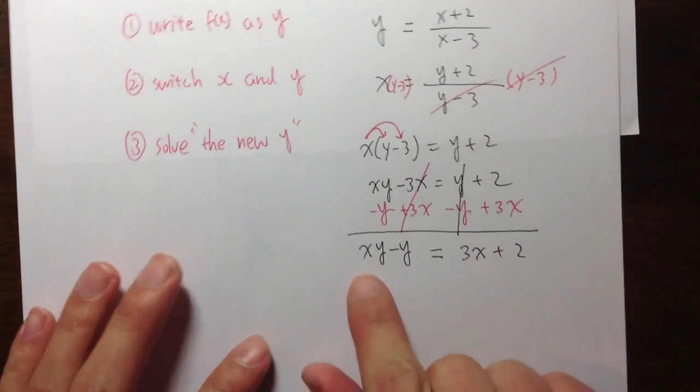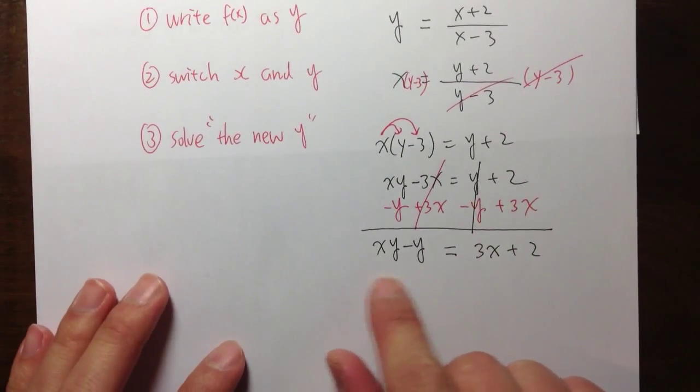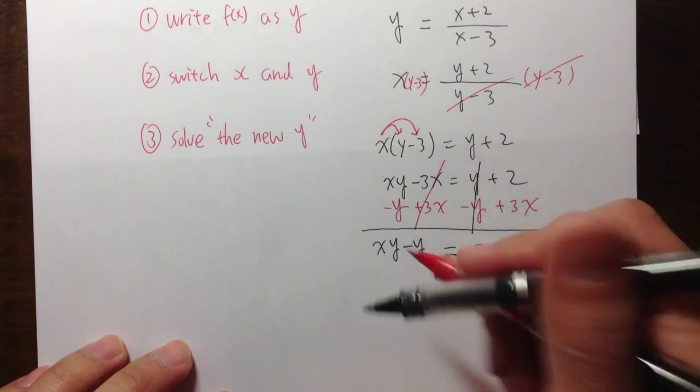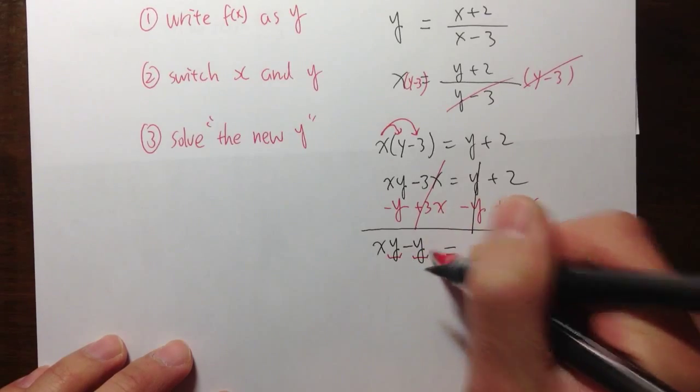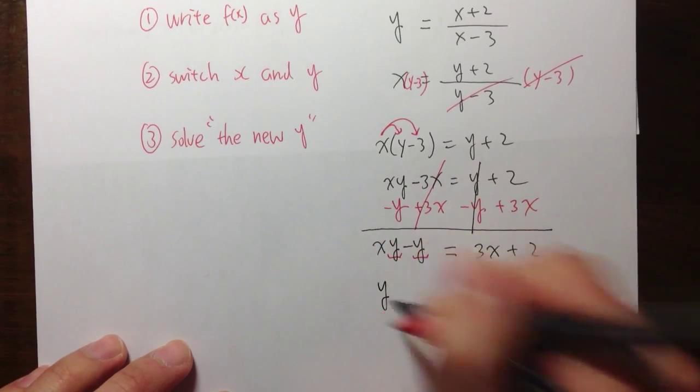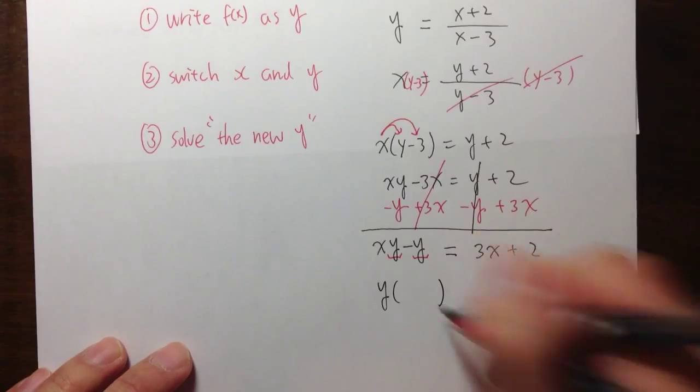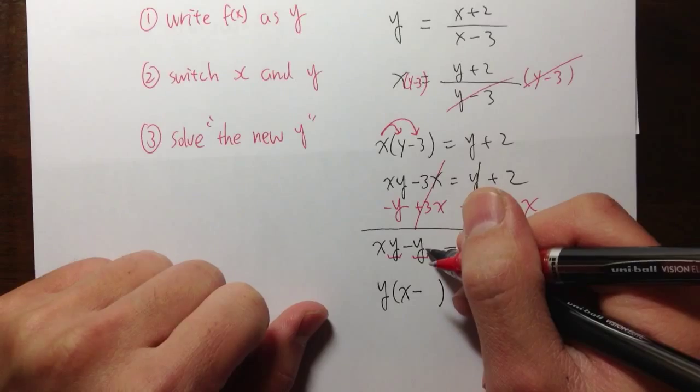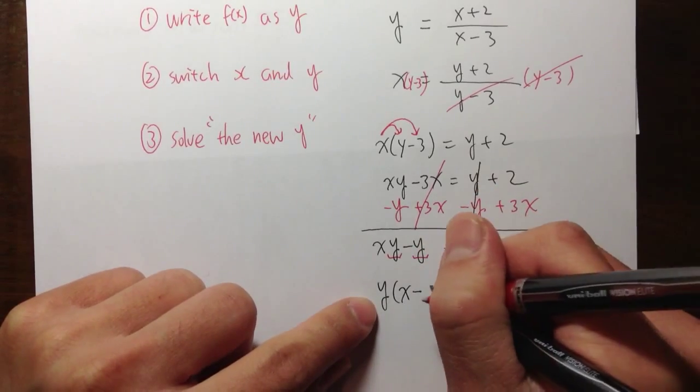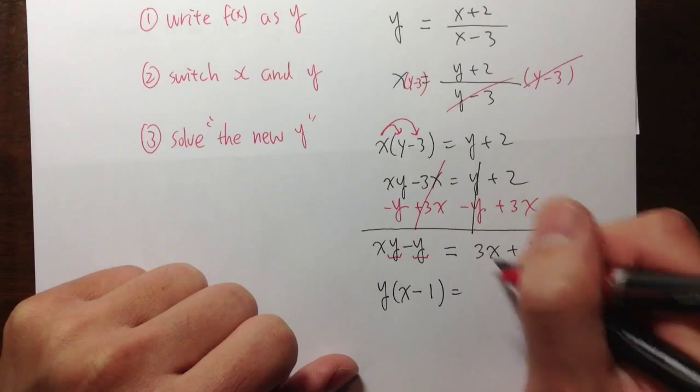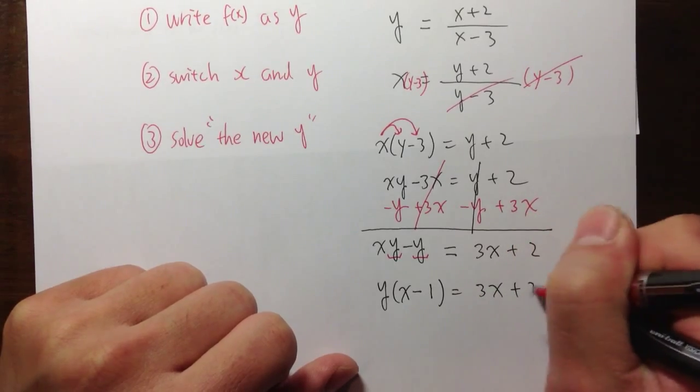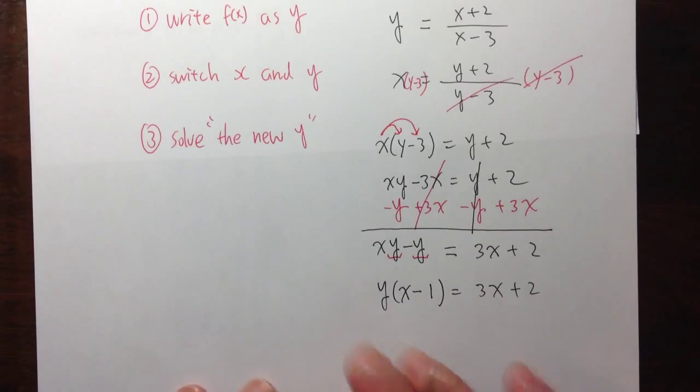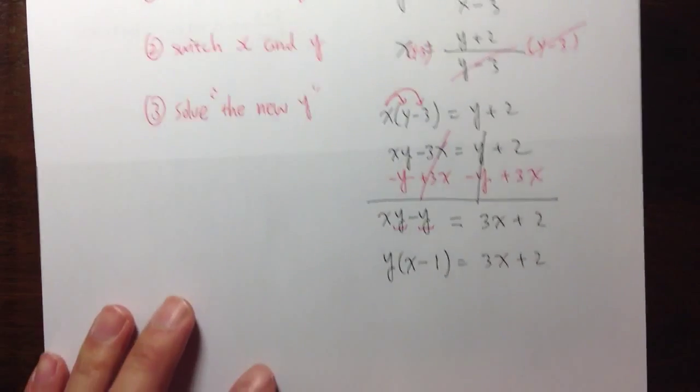And the good thing about this is that once the y's are on one side, we can factor out the y. So, notice the y's and y, we can factor that out. And then, we have an x left first. Minus, originally you have a y, you factor that out. So, you actually have a one left. And that's equal to 3x plus 2. So, this is how we can kind of condense one y, right? Originally, you have two. But once you factor it out, you just have one y.